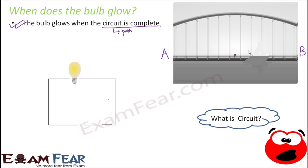Now imagine a situation where the bridge is broken. Once the bridge is broken, what happens to the cyclist? He will reach up to a certain point, but from there there is no path. Since there is no path, he will not be able to reach town B. This person is like current — like the charges. The charges will be able to flow only if there is a path. If the path is broken in between, current will not be able to flow. The same thing happens in case of this circuit: only when the entire circuit is complete will current flow through it.